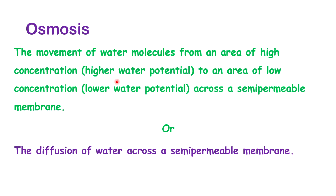Just to make a note here: what higher water potential means and what lower water potential means. When you think about higher water potential, think that the water has a greater chance or greater potential of moving from that area. If it is a low water potential, it means that water will be unable to move from that area — less potential of moving.